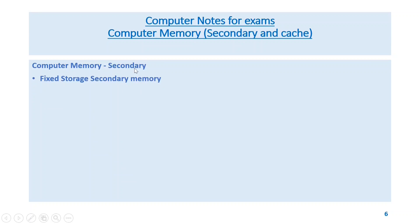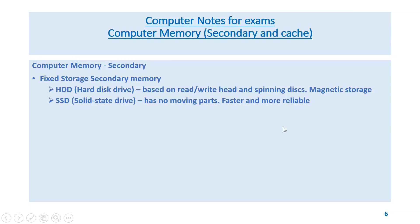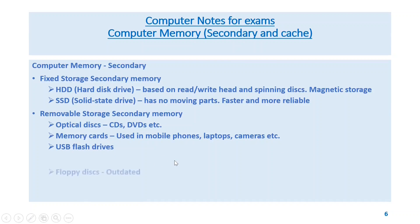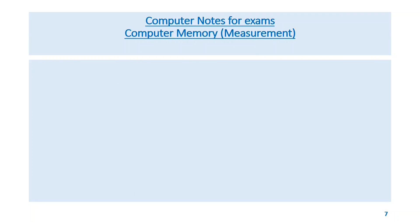Secondary memory: fixed storage includes the hard disk drive, which is based on a read/write head and spinning disk — it is magnetic storage. SSD (solid state drive) has no moving parts and is faster and more reliable. Removable storage includes optical disks like CDs and DVDs, memory cards used in mobile phones, laptops and cameras, and USB flash drives. Floppy disks are now outdated. Cache memory temporarily stores frequently used data and instructions for quick processing by the CPU.